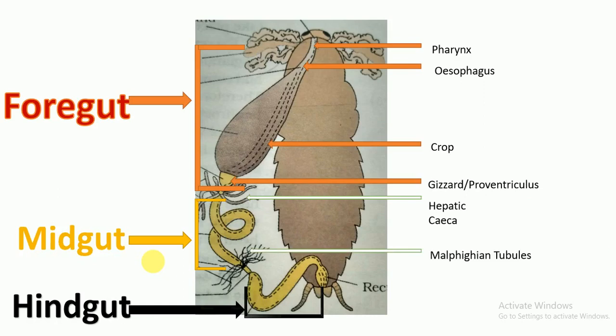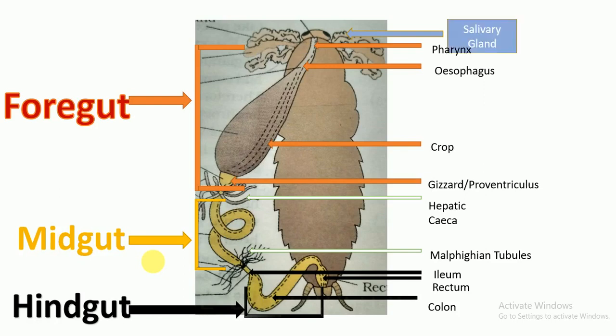At the anterior of the hindgut, the ileum is present. In the middle, the colon is present, and the rectum is present posteriorly. In the mouth portion, salivary glands are present, and each salivary gland has its own salivary reservoir.